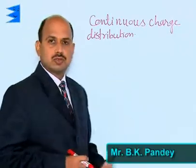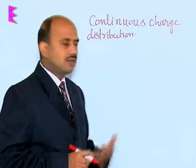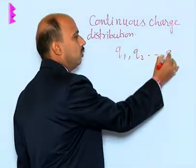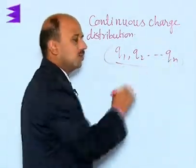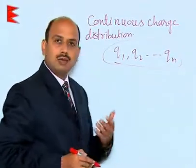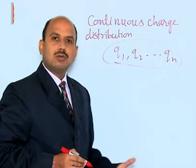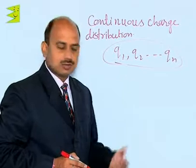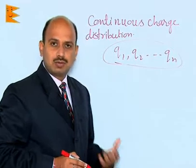We have done electric field due to discrete nature of the charges, like Q1, Q2 and Qn. These are the discrete nature of the charges, because the charges are available in integral multiples. We have calculated electric field at any point and electrostatic force due to discrete nature of the charges, because the calculation is simple and does not involve any calculus.